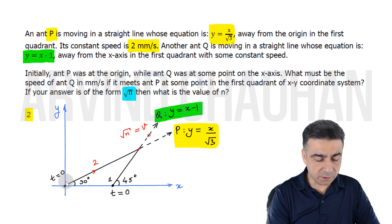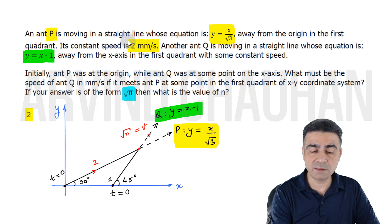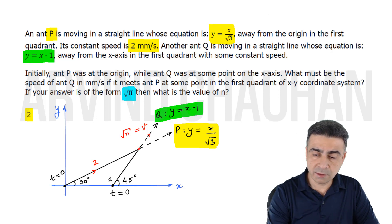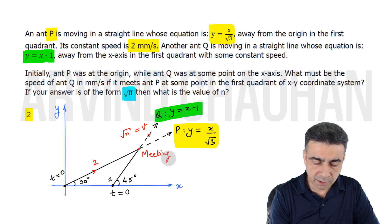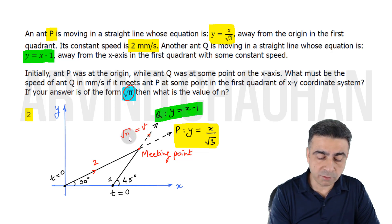Initially ant P was at the origin while ant Q was at the point on the x-axis, at t equals 0. What must be the speed of ant Q in millimeters per second if it meets ant P at some point in the first quadrant? This is the meeting point where the two ants are going to meet. We need to find the speed of ant Q. If it comes out to be square root of n, then n is the integer we are looking for.